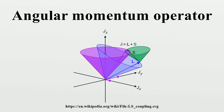The Robertson-Schrödinger relation gives the following uncertainty principle, where σ is the standard deviation in the measured values of x and ⟨x⟩ denotes the expectation value of x. This inequality is also true if x, y, z are rearranged, or if L is replaced by J or S. Therefore, two orthogonal components of angular momentum are complementary and cannot be simultaneously known or measured, except in special cases.